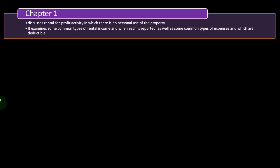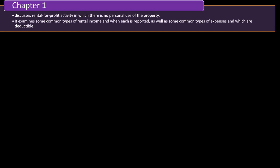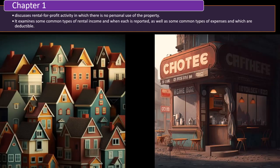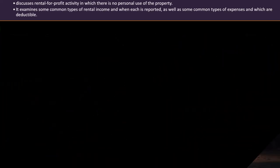Rental property has a similar structure to a Schedule C — it's an income statement with income minus expenses — but with additional concepts to consider. Chapter one discusses rental for-profit activity in which there is no personal use of the property, examining common types of rental income and when each is reported, as well as common types of deductible expenses.